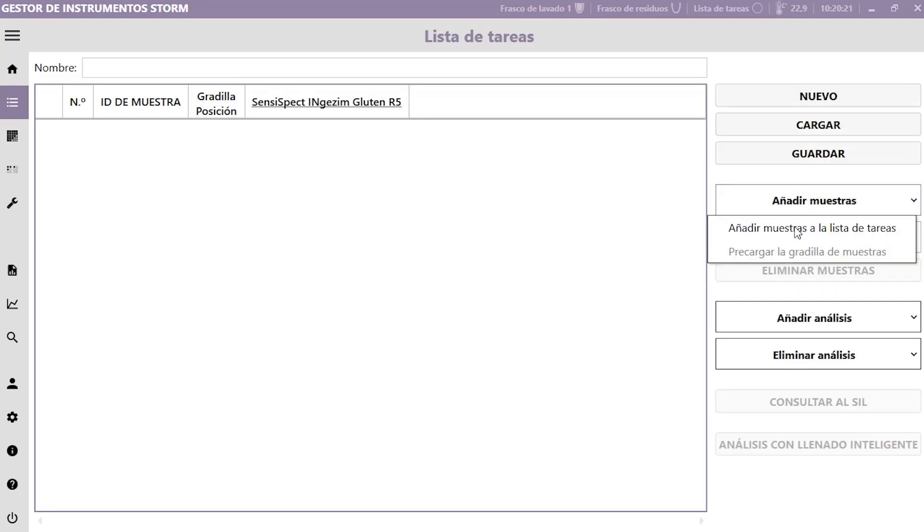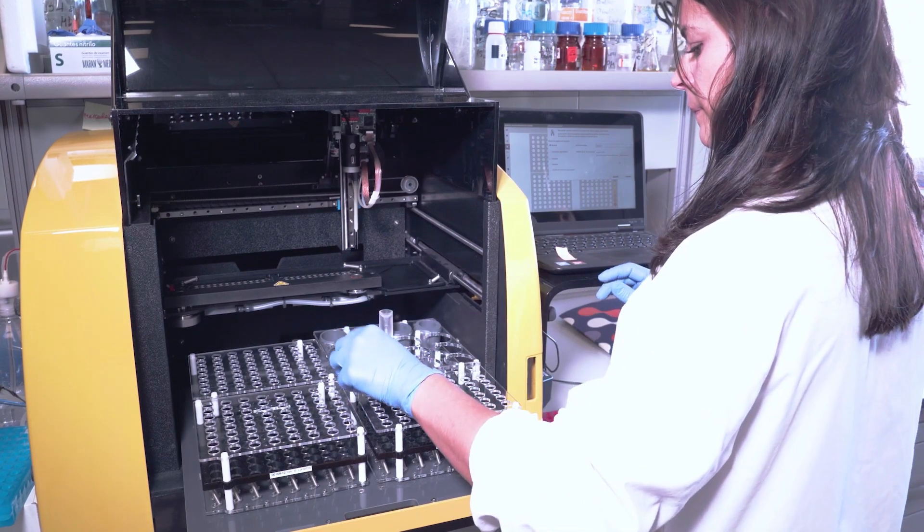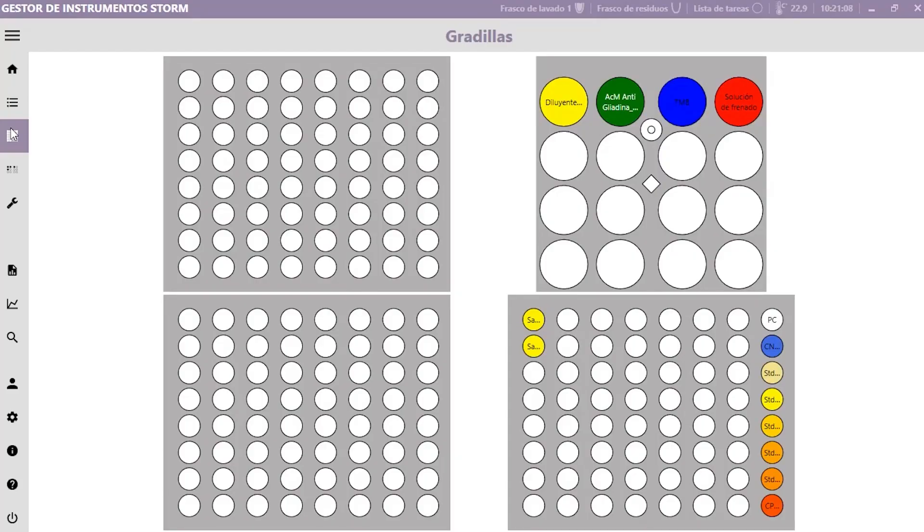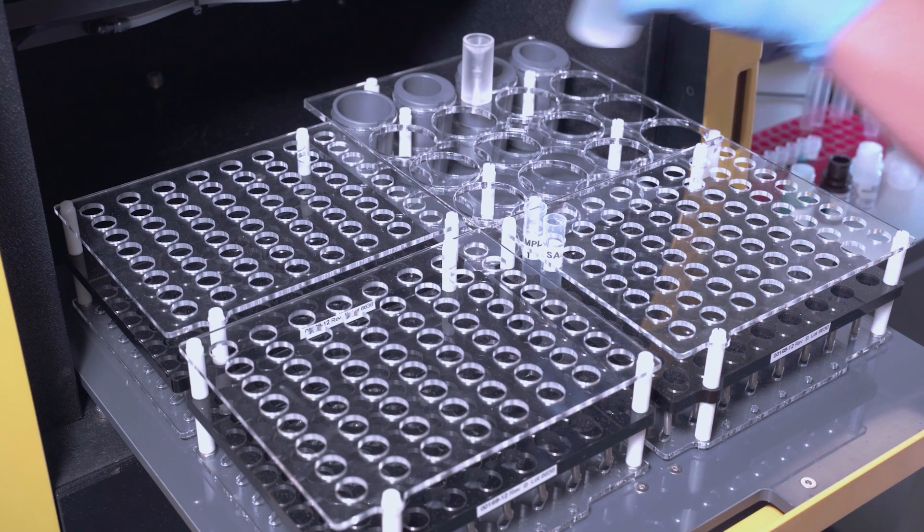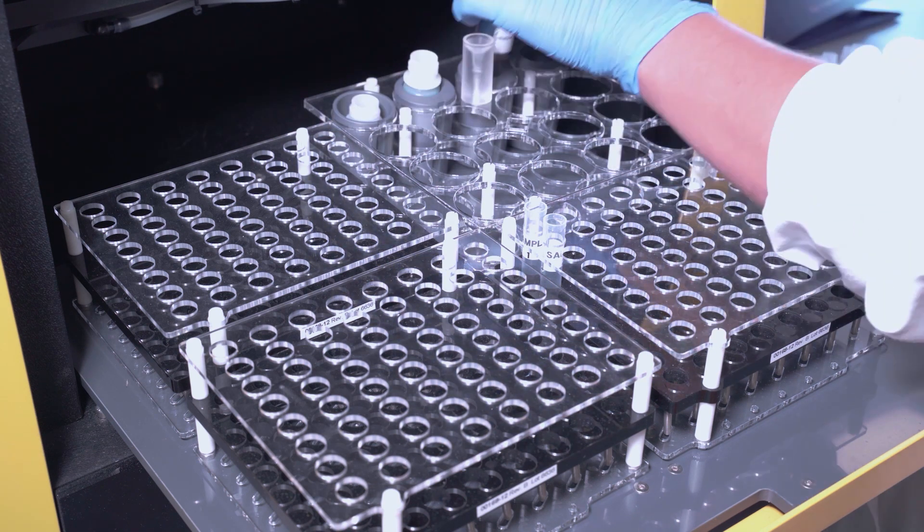Load the gluten program. Select the samples and the correspondent dilutions. Add the reagents and the calibration curve in the correct holes, following the program instructions.